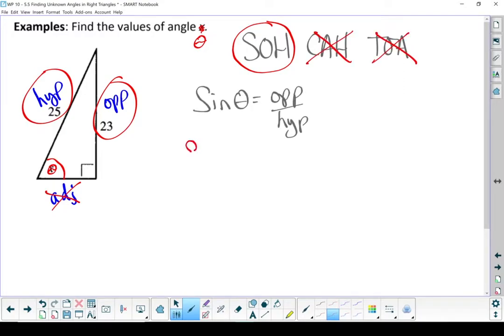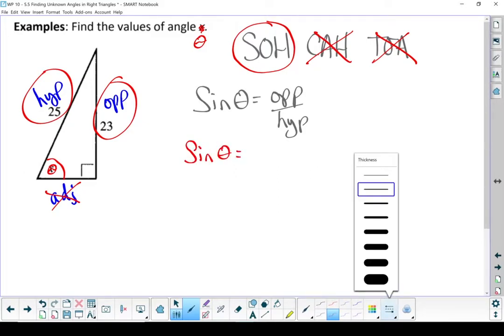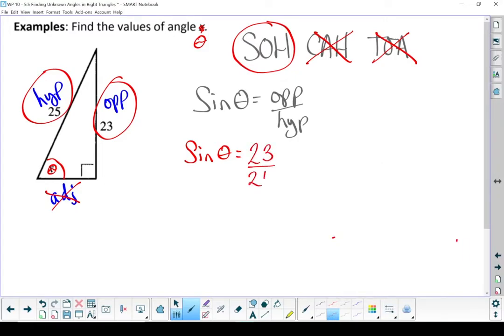Now let's put in what we know. I don't know my angle, so I'm going to leave it as theta. I do know my opposite side and I do know my hypotenuse. I'm going to take that 23 over 25, and I'm going to turn it into a decimal. 23 divided by 25 is 0.92.